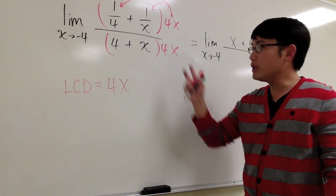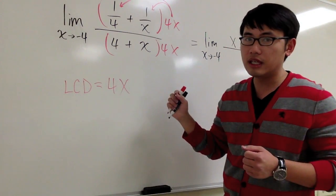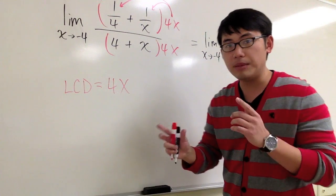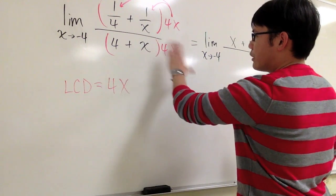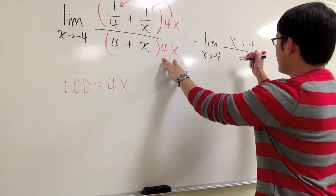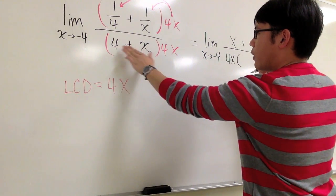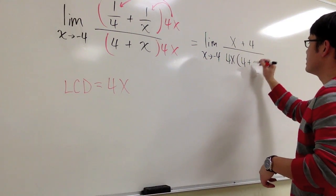And we only want to apply this on the top because that's where the complex fraction is, the small fractions. On the denominator, I didn't need to fix it, so let me just keep it as is. I will write 4x in the front, and then we will have 4 plus x in the parentheses.